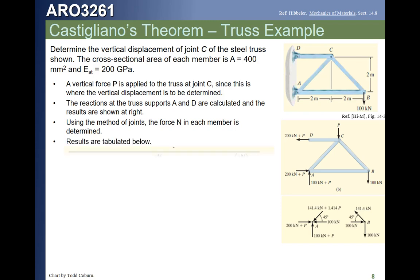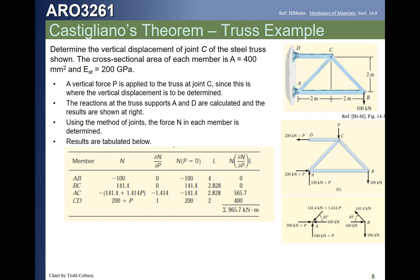We then can tabulate our results where we have each member listed. We have the axial force in each member. We then take that axial force, that N column, and take the partial of each with respect to P. You'll notice in AB, there's no P. Therefore, the partial of the force in AB with respect to P is just zero. Same thing for BC. But both AC and CD have the force P in those members. And therefore, when we take the partial, we get the two partials shown in this table.